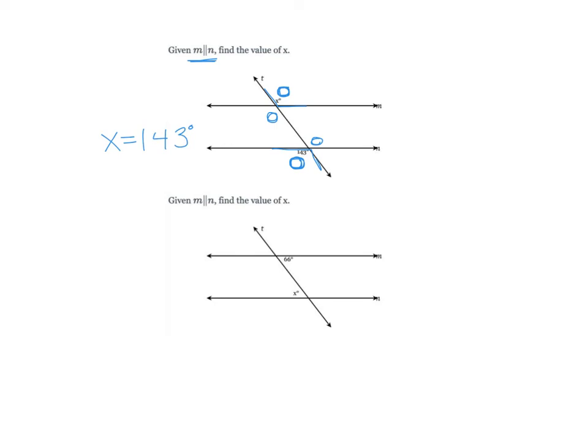On our next picture, 66 is acute and this angle x is bending in less than a 90 degree angle, so it's also acute. So x is 66.